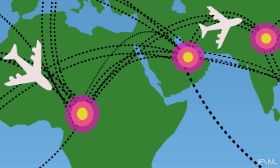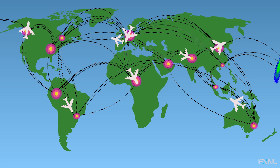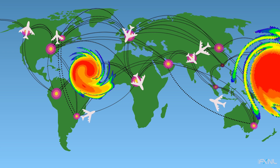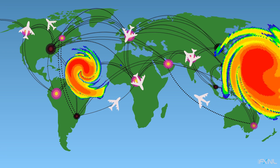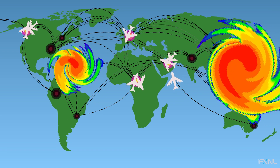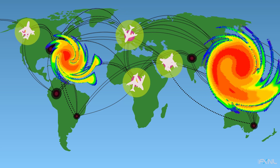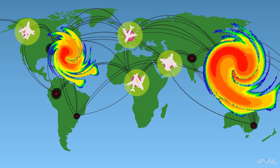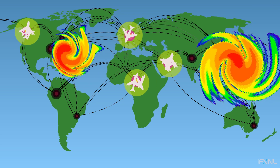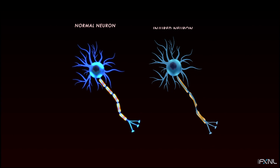If a storm comes in, some flights will be grounded and others diverted to alternate airport hubs for safety, increasing the operational demand at those hubs. This bad weather also leaves a trail of damage in its path.